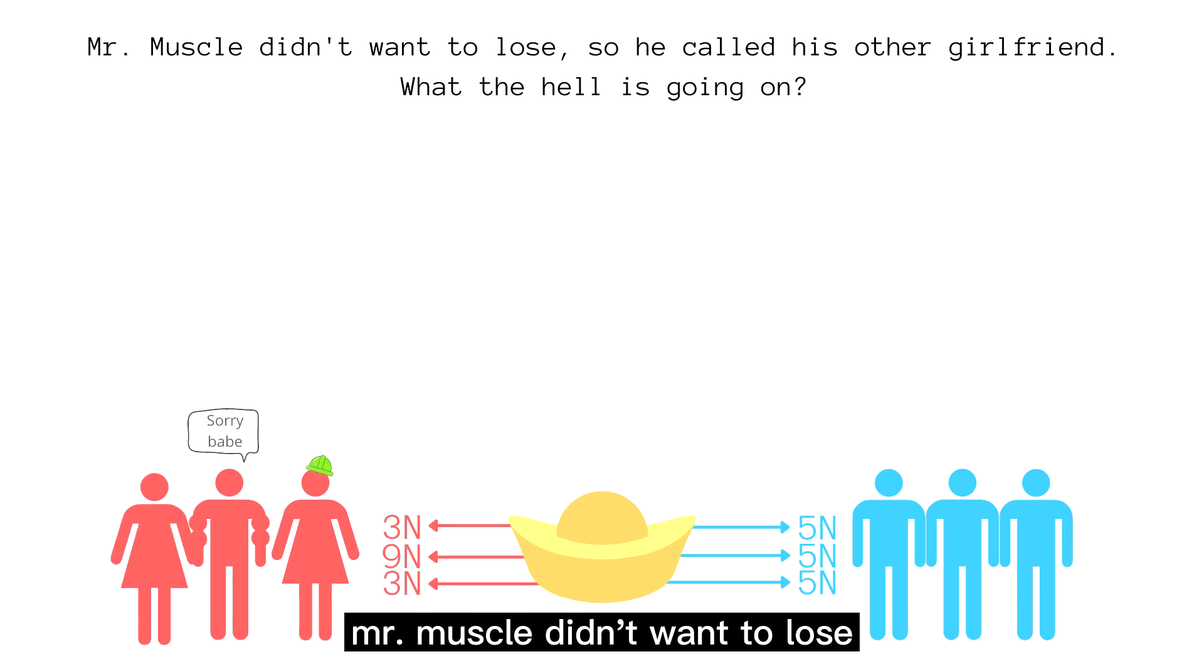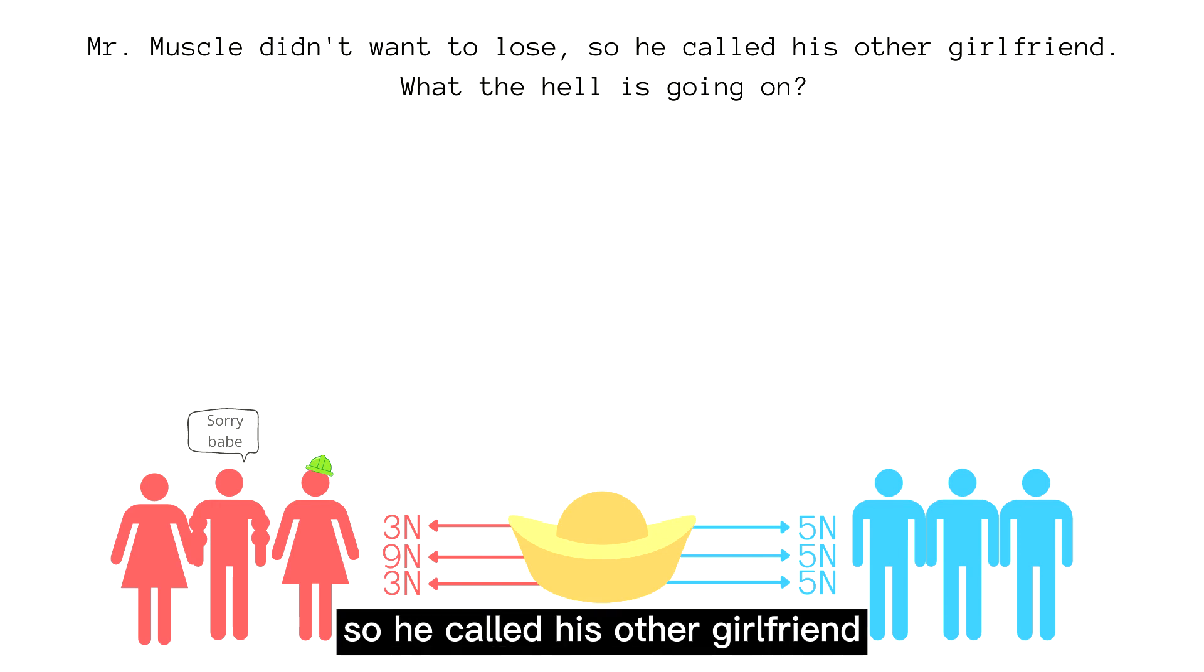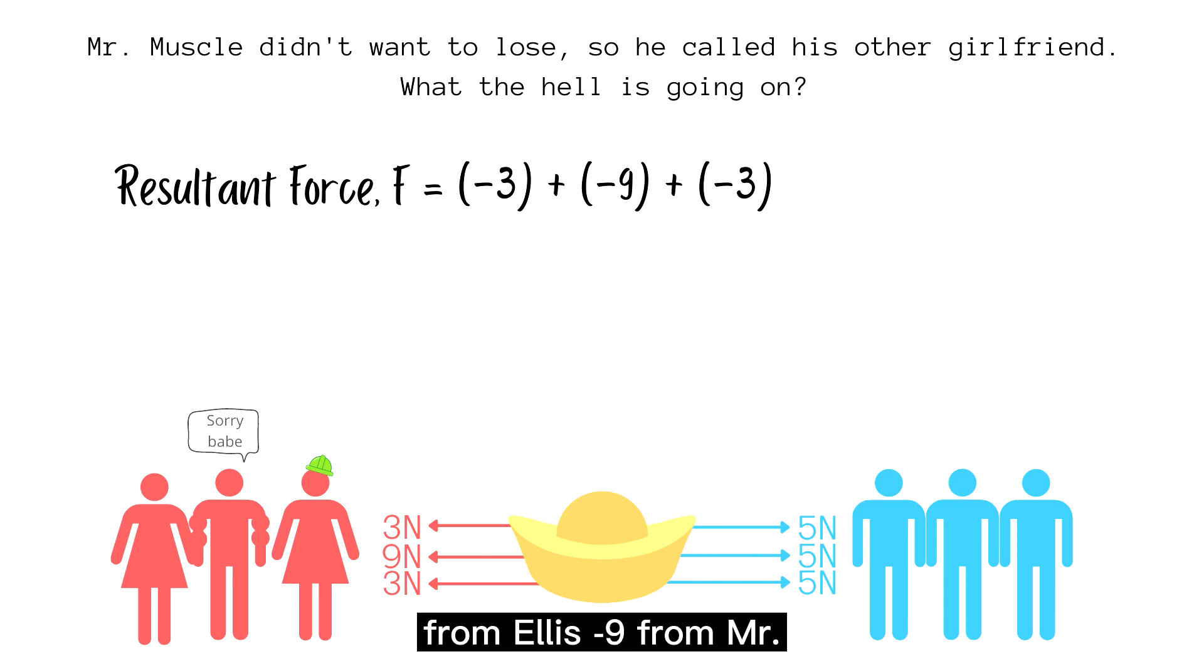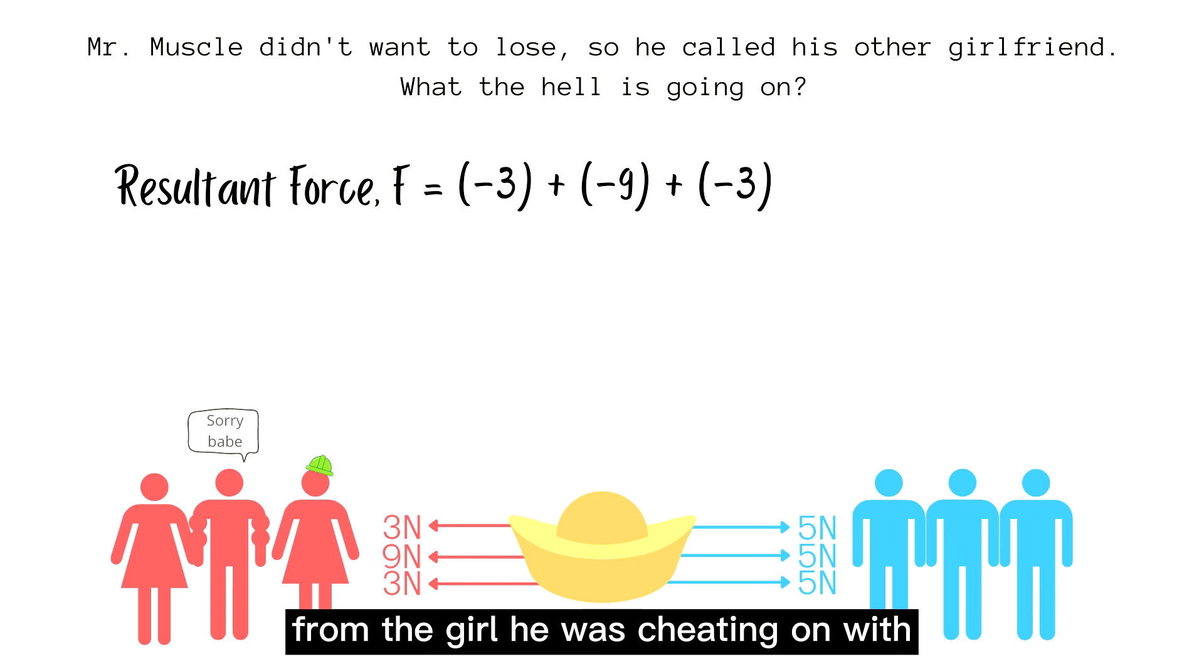Now Mr. Muscle didn't want to lose, so he called his other girlfriend. What? So now, on the left side, we have negative 3 from Alice, negative 9 from Mr. Muscle and negative 3 from the girl he was cheating on with. On the right, we have our Puchong gang, plus 5, plus 5, and plus 5.